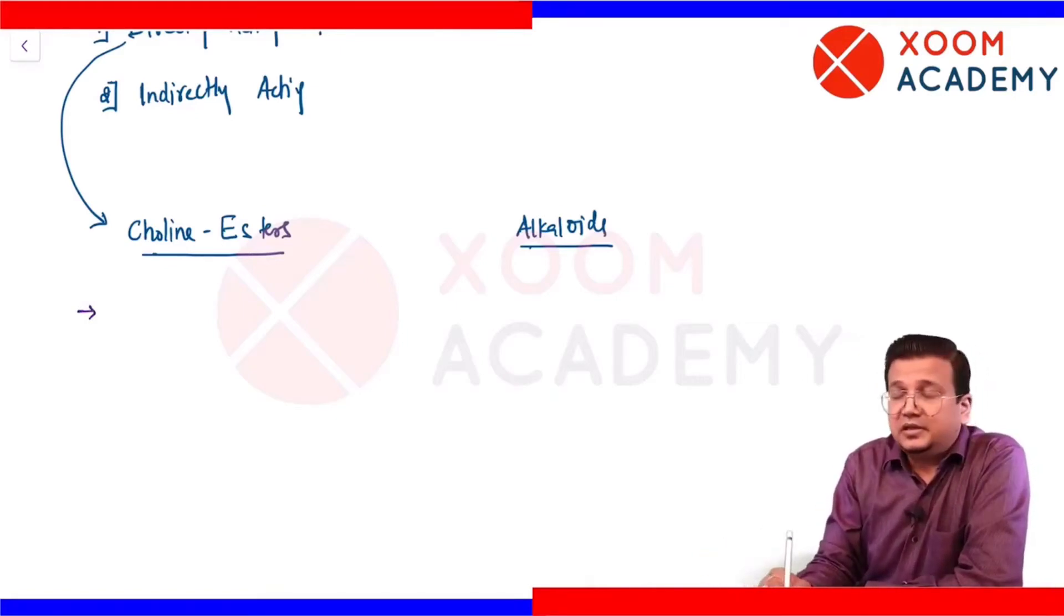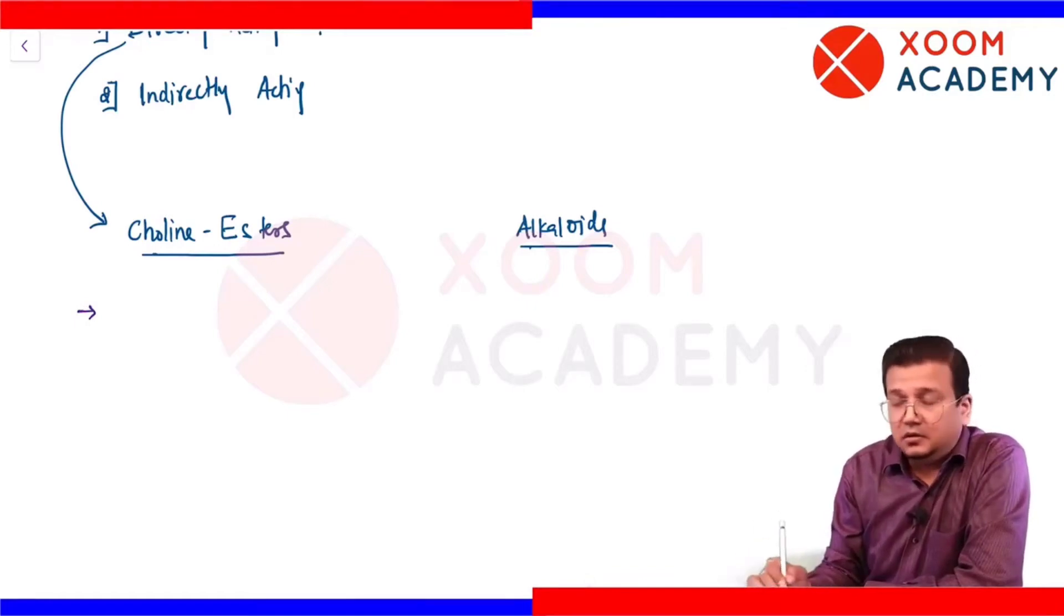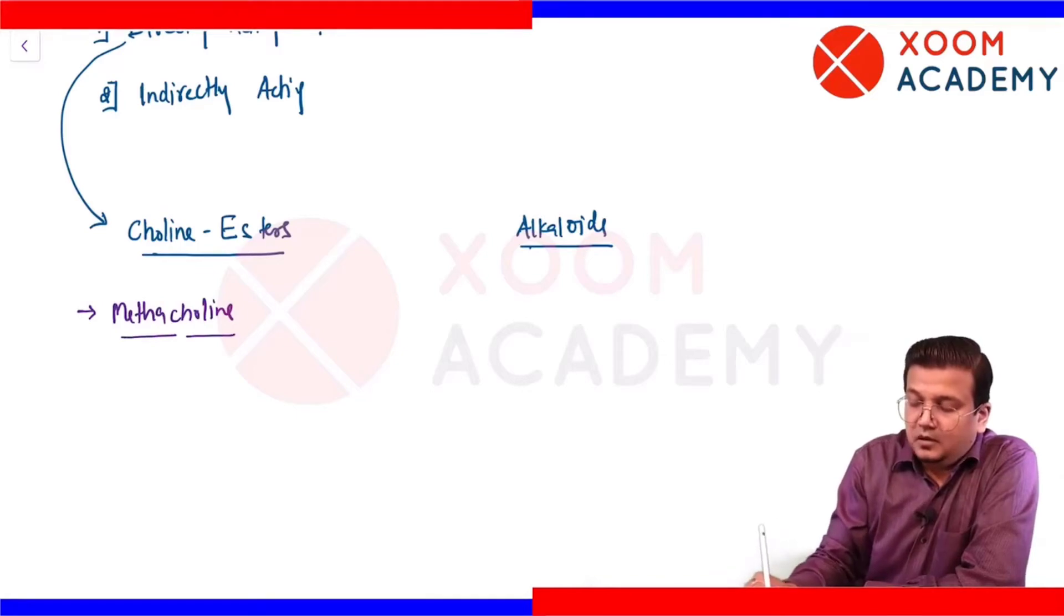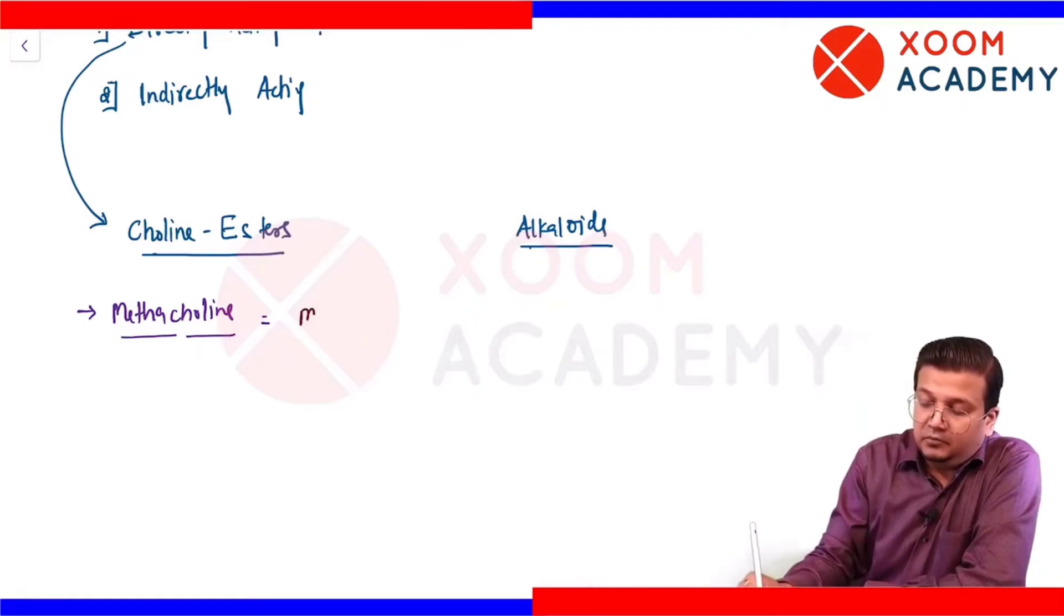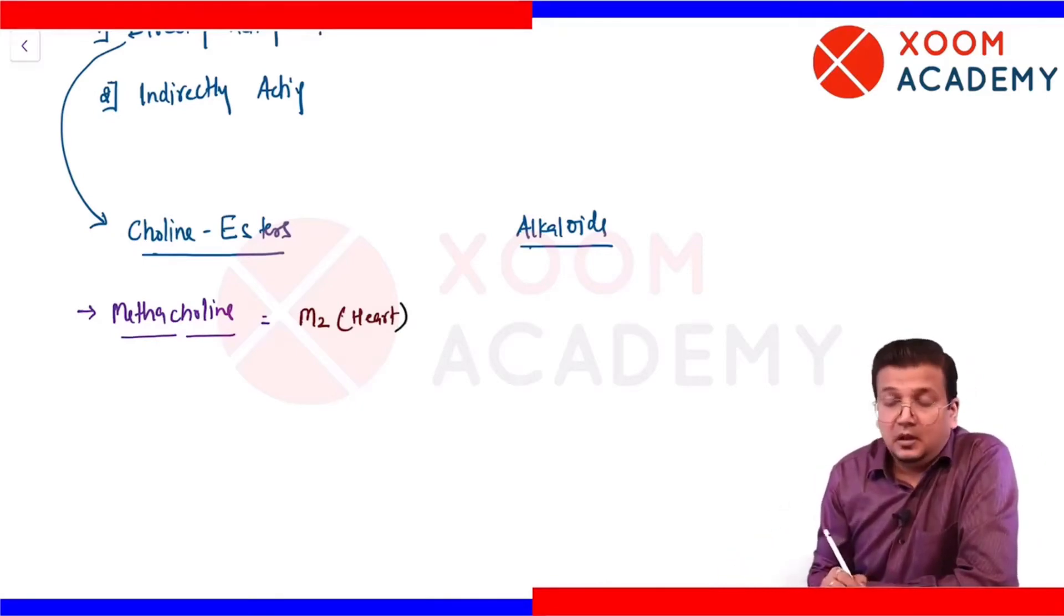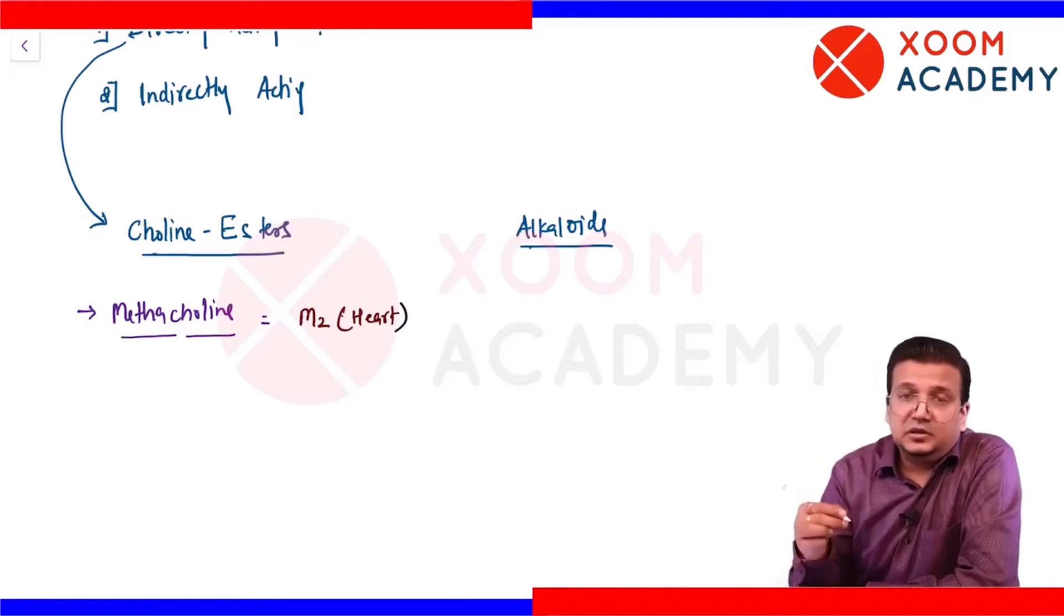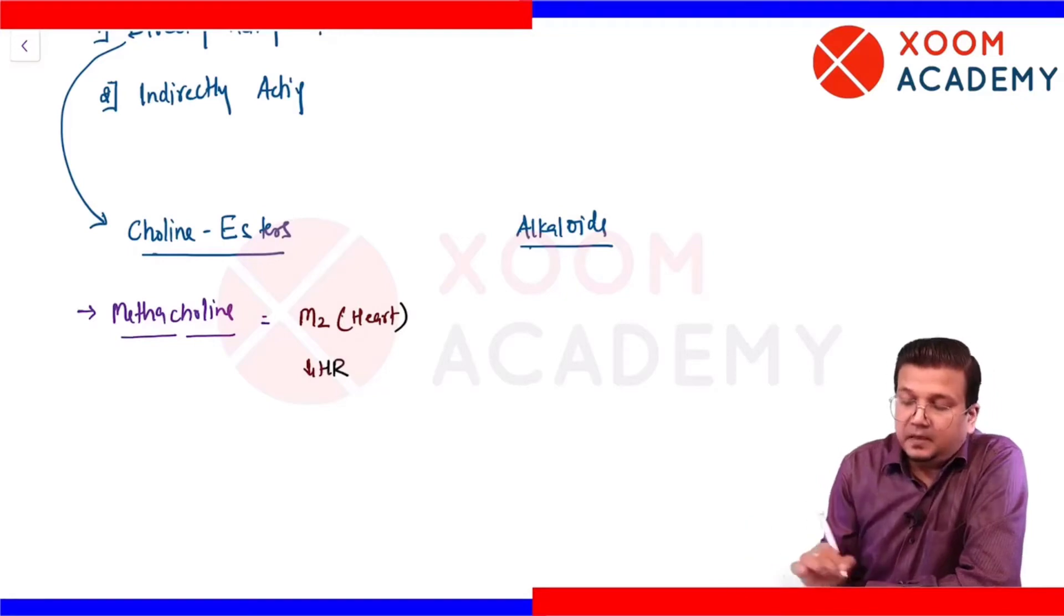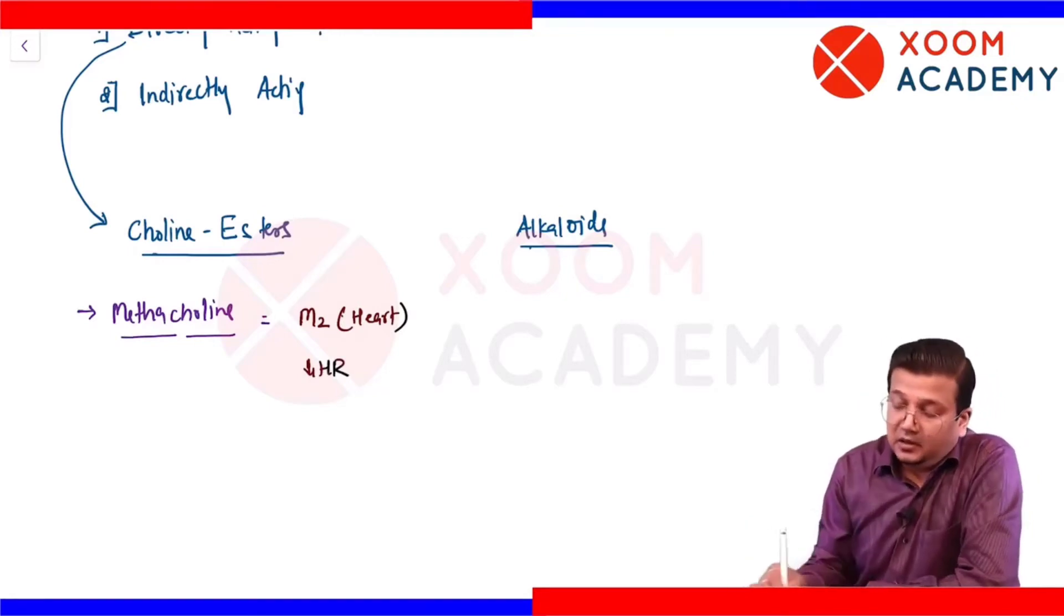Choline esters - these drugs act on muscarinic or nicotinic receptors themselves. The first choline ester that we have is methacholine. Methacholine is a drug that will stimulate M2 receptors, and M2 receptors as you all know are present on heart. What is the result of M2 receptor stimulation? I have told you in the table above - it decreases heart rate, that is the main action.